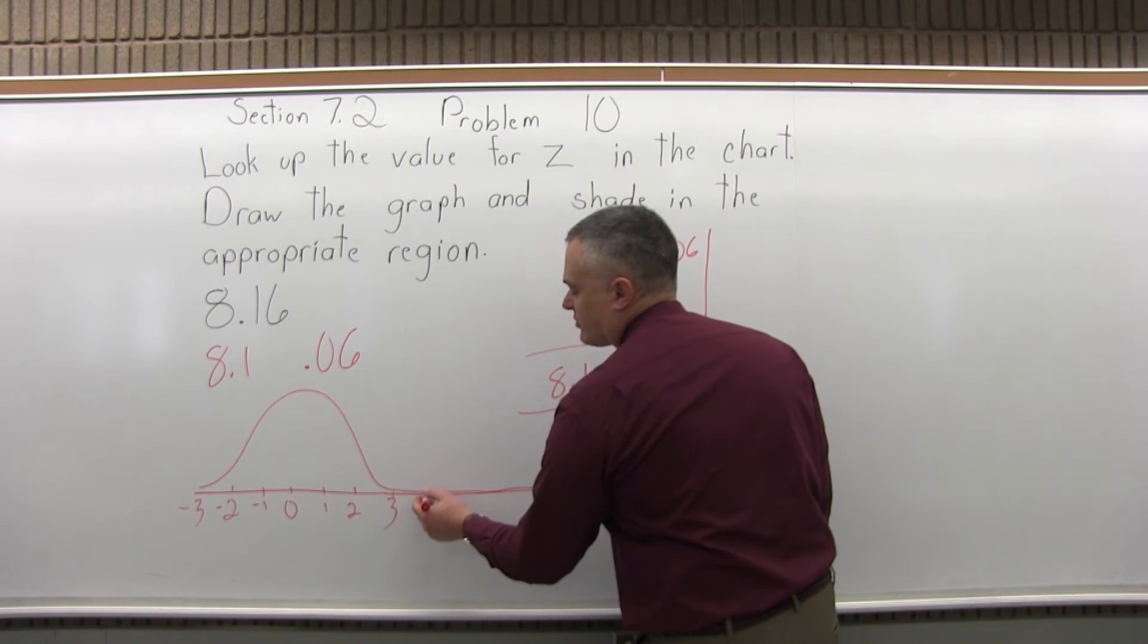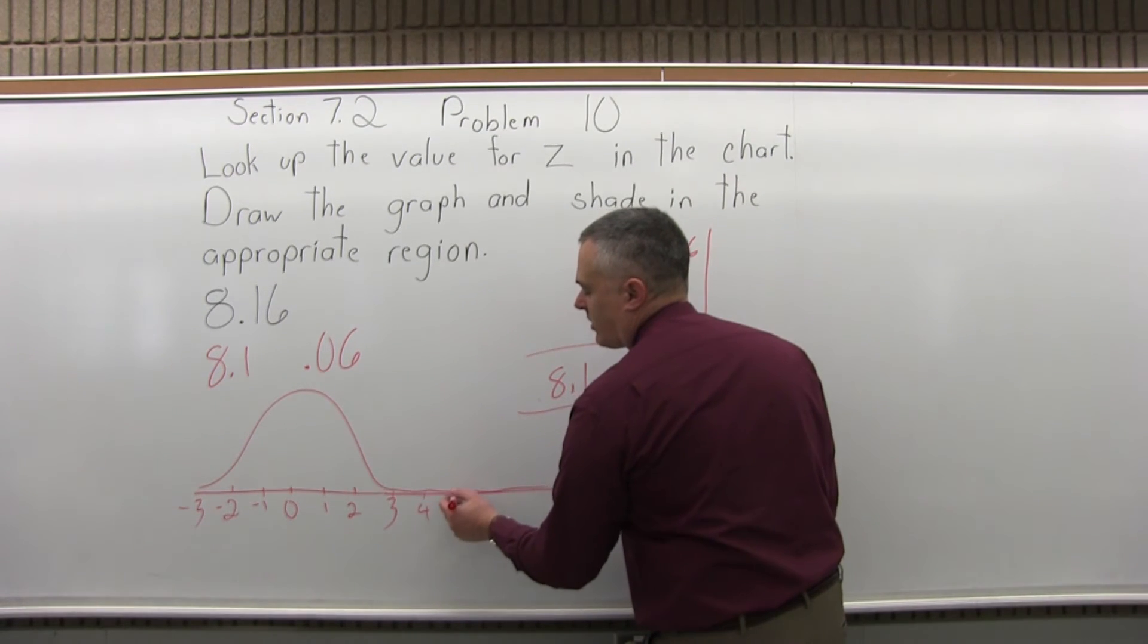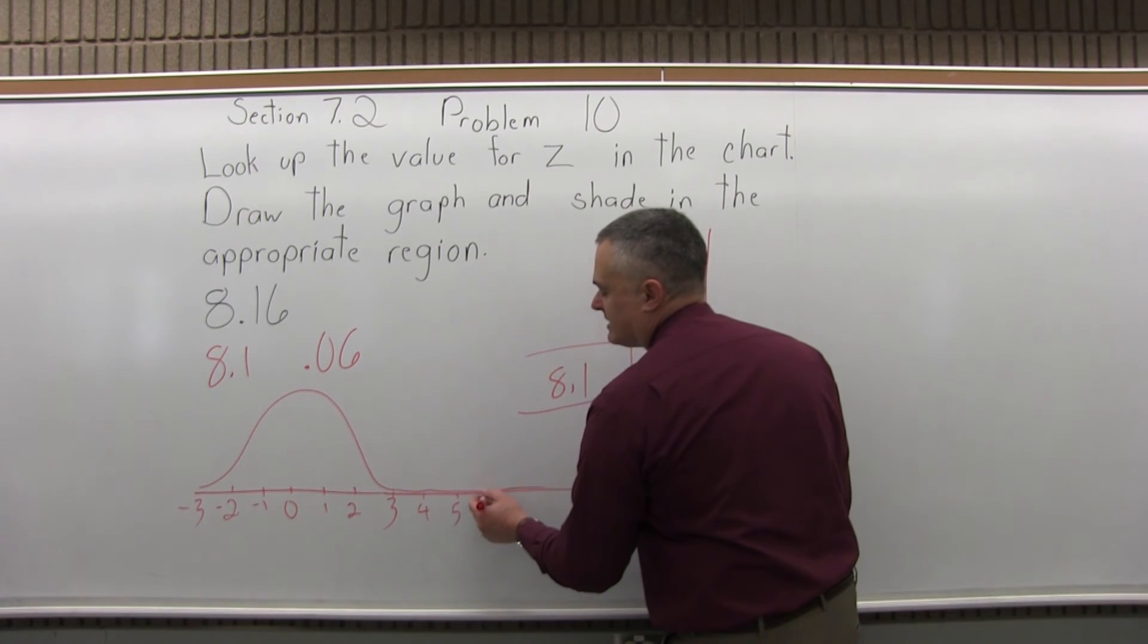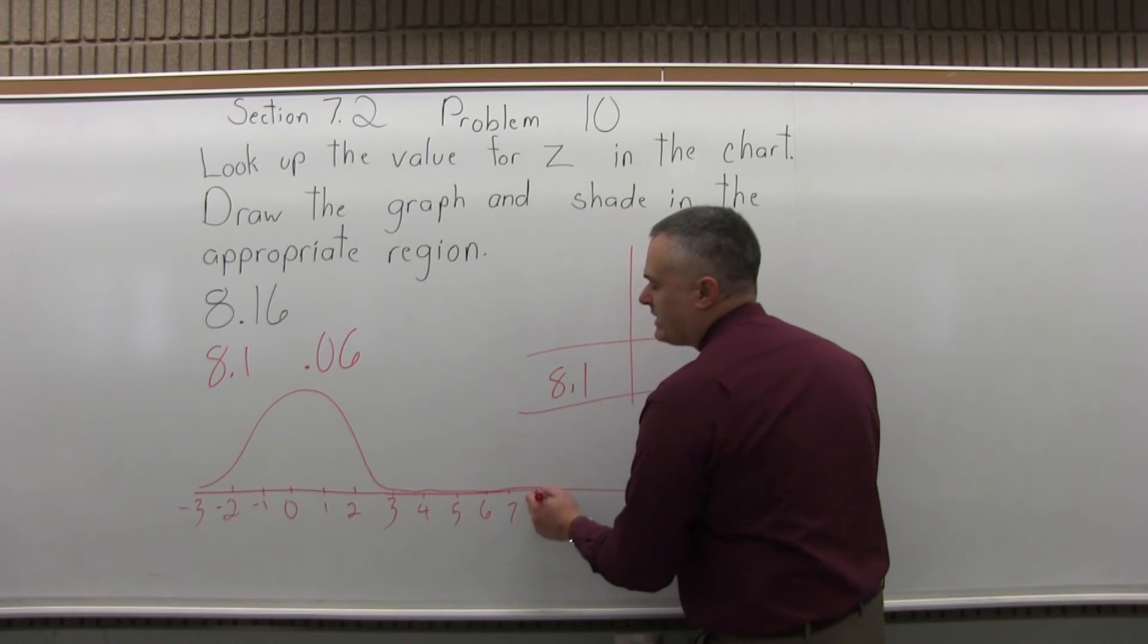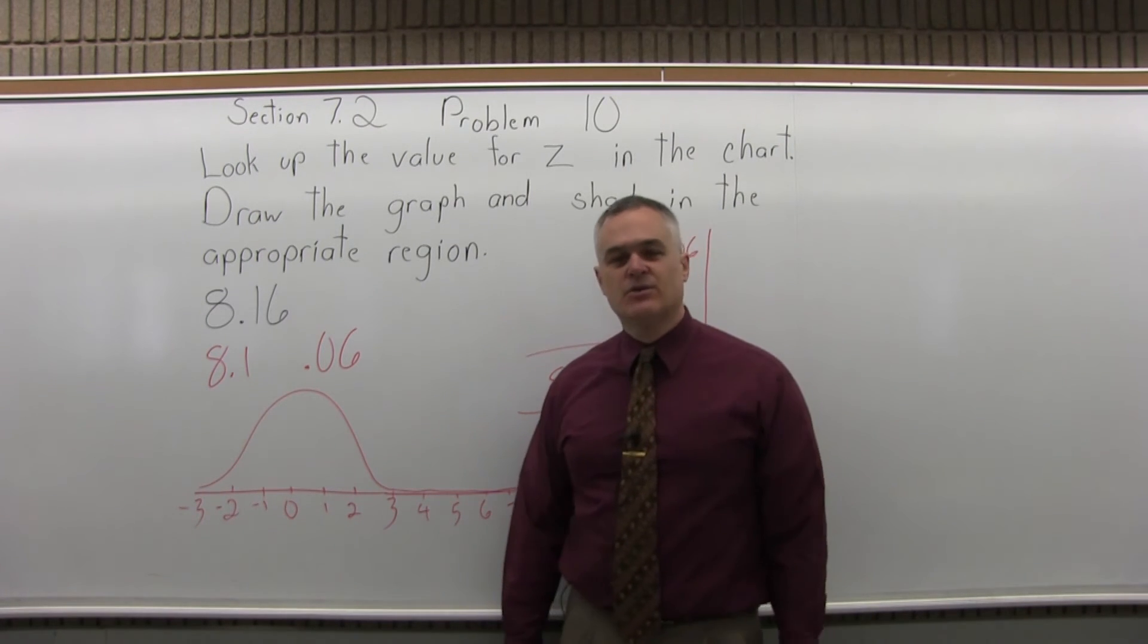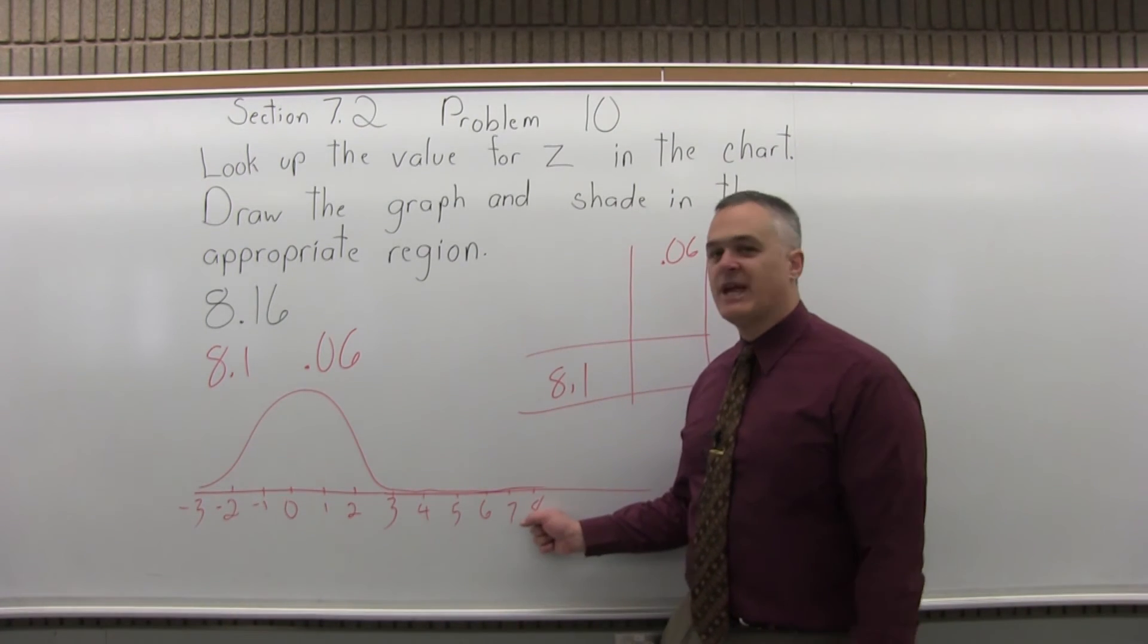So that's 3, we have 4, 5, 6, 7, 8. Now what does it mean to be 8 standard deviations larger than the average value? It's such a rare occurrence that we don't really ever deal with it.